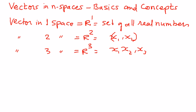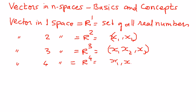Similarly, a vector in four spaces is represented as R4. And this is a set of all ordered quadruples of real numbers. The quadruples could be (x1, x2, x3, x4).